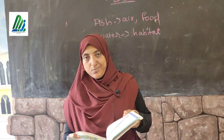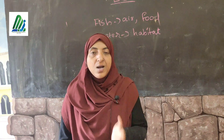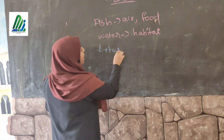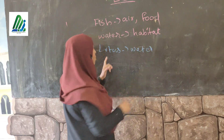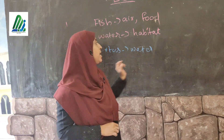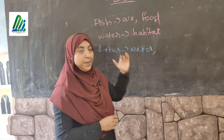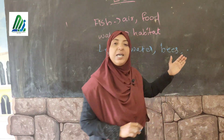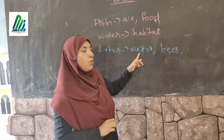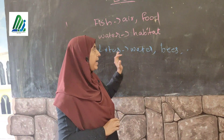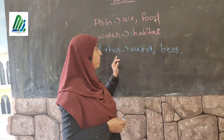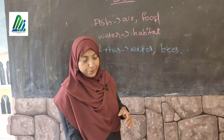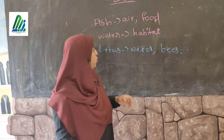Next, lotus — lotus is a biotic factor and it lives in water, so water is an abiotic factor. Lotus is a flower, and there is honey in the lotus, which is the food for bees, butterflies, and beetles. Without water, lotus cannot live. So this biotic and abiotic factor are mutually interdependent, and because of that bees, butterflies, and beetles can get their food.